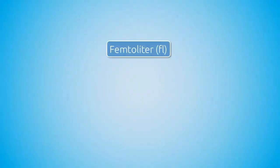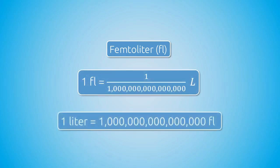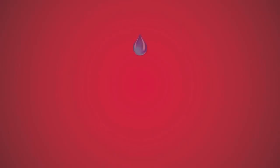The unit of measurement for the volume of an RBC or a platelet is called femtolitre. A femtolitre is a very, very small volume — one quadrillionth of a litre — meaning one litre equals one quadrillion femtolitres. It is an unimaginably small number; in fact, one drop of water has approximately a volume of 50 billion femtolitres.